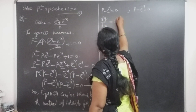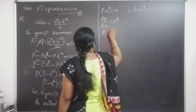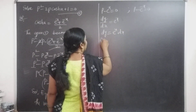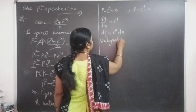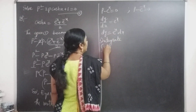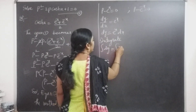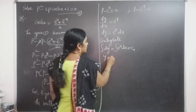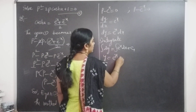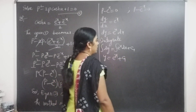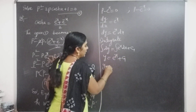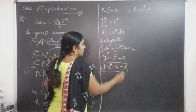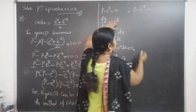From the first factor: dy/dx = eˣ. Separating variables: dy = eˣ dx. Integrating both sides: y = eˣ + c₁. Therefore: y - eˣ - c₁ = 0 is the solution of the first factor.